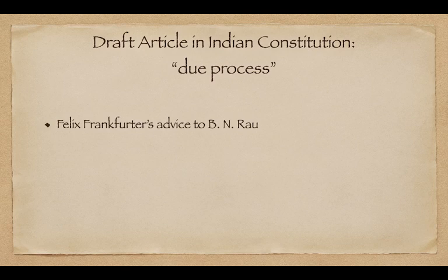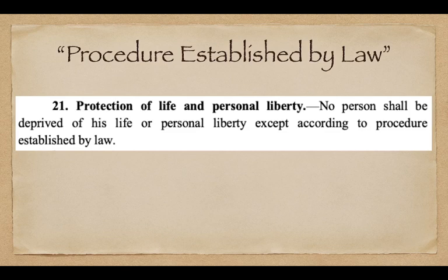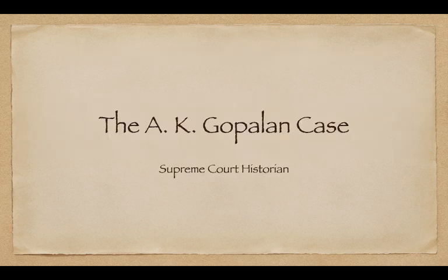Justice Frankfurter recommended that India should follow the procedure established by law jurisprudence, just as Japan had. It is not surprising that such advice came from Justice Frankfurter, who is a known advocate of judicial restraint — the same judicial restraint that was followed by the Indian Supreme Court in the A.K. Gopalan case. The Constituent Assembly removed due process and instead drafted Article 21 as it appears to this day: 'No person shall be deprived of his life or personal liberty except according to procedure established by law.'